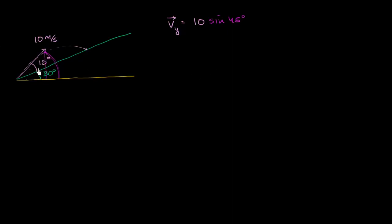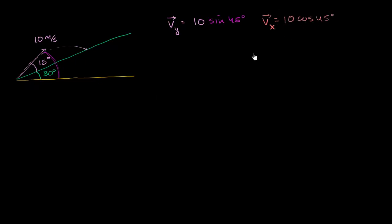This comes from SOHCAHTOA. If we draw the vertical component, the sine of 45 degrees equals the opposite over the hypotenuse, so the hypotenuse times sine of 45 degrees equals the vertical component. And the horizontal component of our velocity is going to be, by the same logic, 10 cosine of 45 degrees.